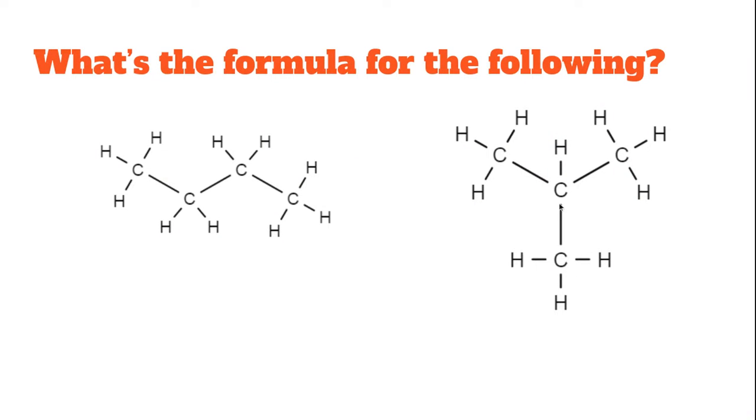If I numbered this carbon 1, carbon 2, and carbon 3, you can see that the longest chain you can form here - and you can do this multiple ways - the longest carbon chain for this structure on the right is only three carbons. So this is not a butane, this is a propane of some sort.